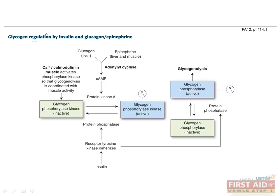Now that we've finished going through the key disorders of amino acid metabolism, let's transition to the normal physiology of the regulation of carbohydrate metabolism. Insulin and glucagon are the two major hormones that regulate the synthesis of glycogen in the fed and unfed states. Let's go through the mechanism of each.